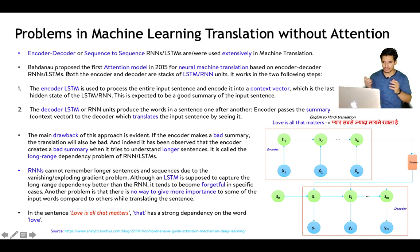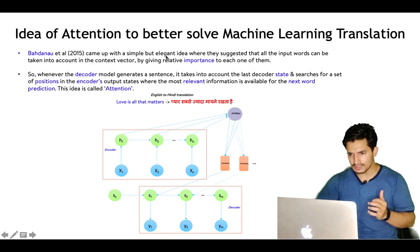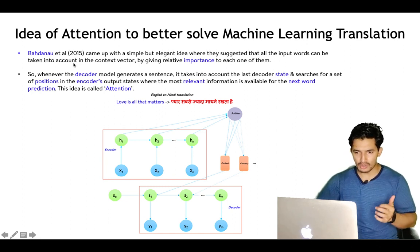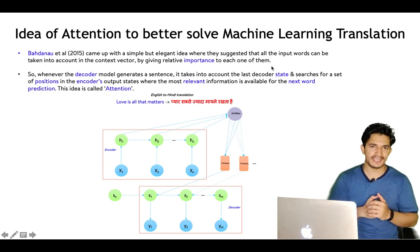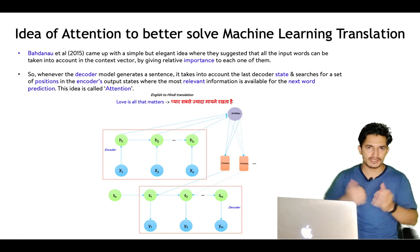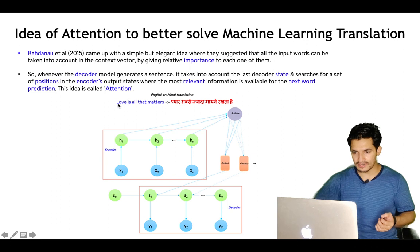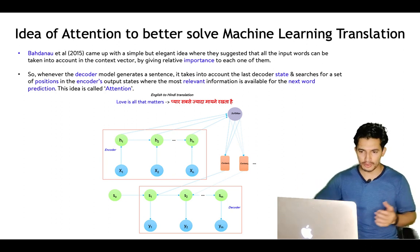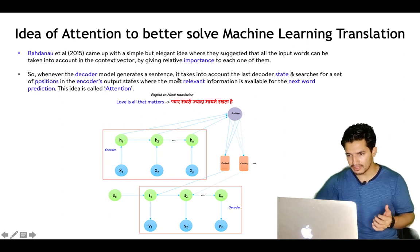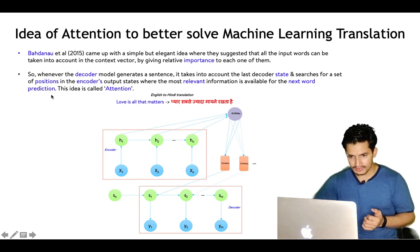The first attention model proposed a simple and elegant solution: all the input words can be taken into account in the context vector by giving relative importance to each one of them. Instead of just considering the last hidden state, we consider the hidden states of all the input words by selectively giving more importance to some. For example, in translating 'love is all that matters,' the word for 'love' will have a stronger dependency on 'love' since it is the main topic. So when the decoder generates a word, it takes the last decoder state and searches for positions in the encoder output states that are most relevant to the next word it will generate. This idea is called attention.